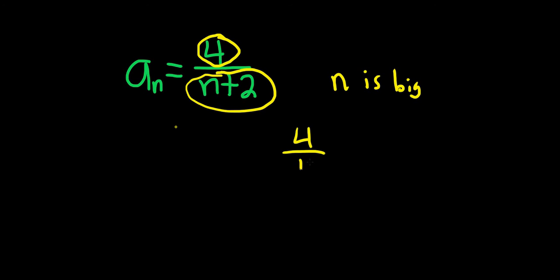you end up with something maybe like 4 over 10, which would be 0.4, 4 over 100, which would be 0.04, 4 over 1,000, which is something like 0.004.